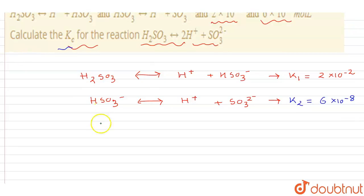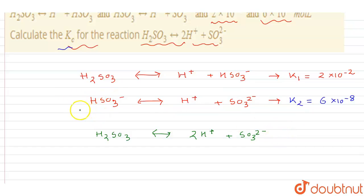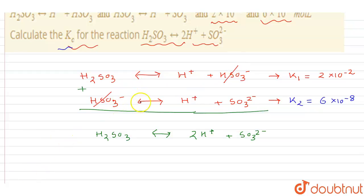We need to find the Kc value for the overall equation: H₂SO₃ reversibly gives rise to 2H⁺ and SO₃²⁻. When we add both equations, the intermediate species HSO₃⁻ gets eliminated, leaving H₂SO₃ on the left side, and 2H⁺ and SO₃²⁻ on the right. This is our resulting equation.